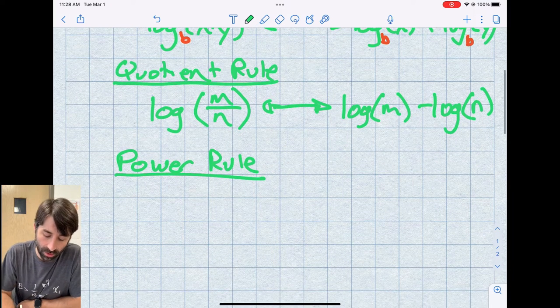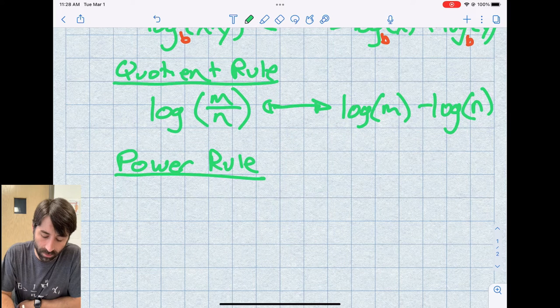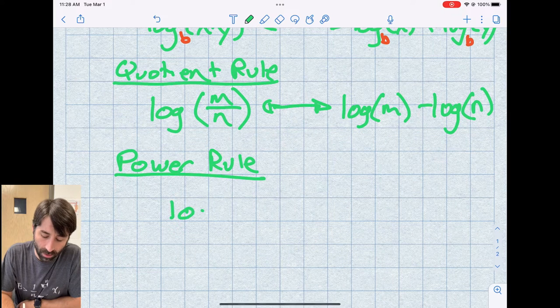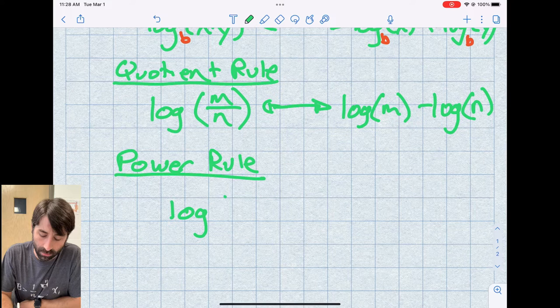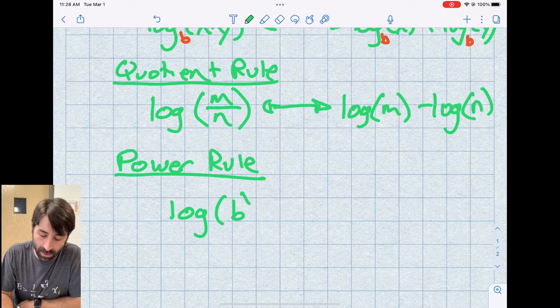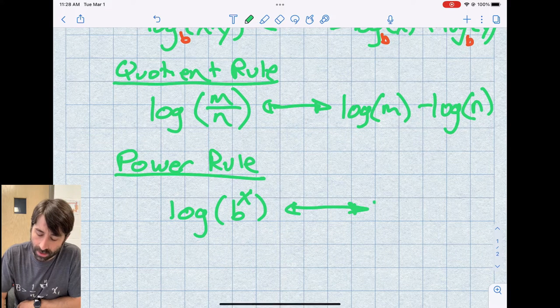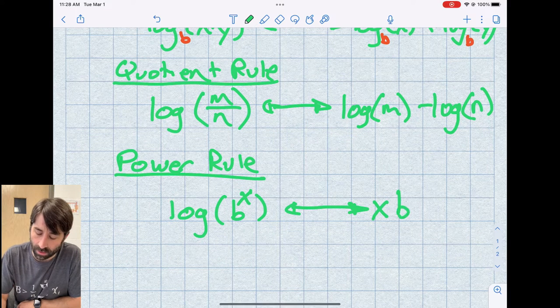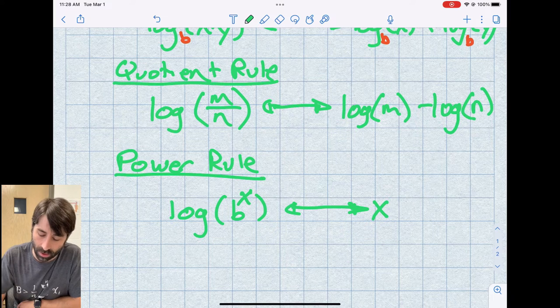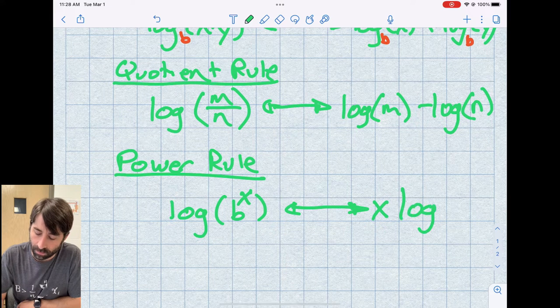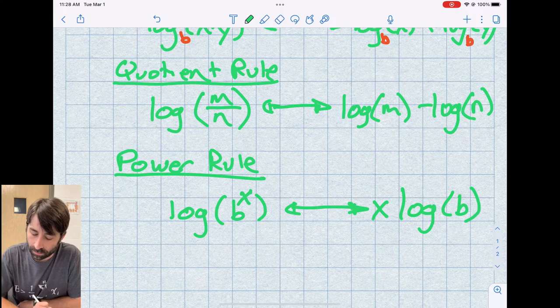So what that looks like is if I have the log of, let's say, b to the x. Well, that x comes down and turns into a factor, and we are left with x log of b.